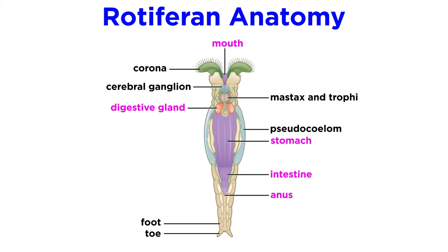Most rotifers have a complete digestive system. Once food is captured and ground up in their muscular jaws, it is covered in gastric juices and other digestive enzymes secreted from the salivary and digestive glands. Absorption of nutrients occurs primarily in the stomach, a large holding chamber that aids in digestion.